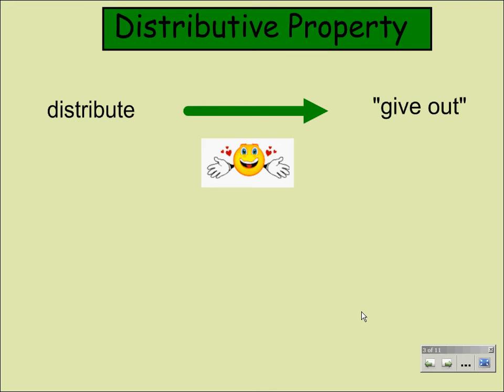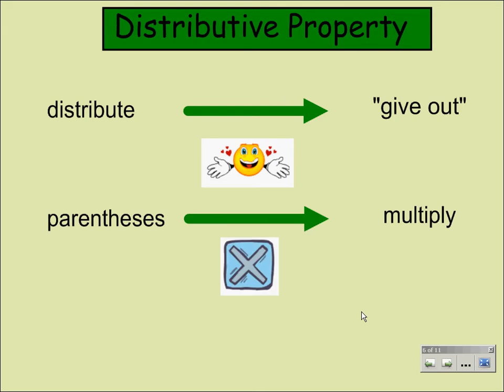Well, the property is to distribute, but the operation that it involves is parentheses, which means to multiply. So we need to keep those two things in mind.